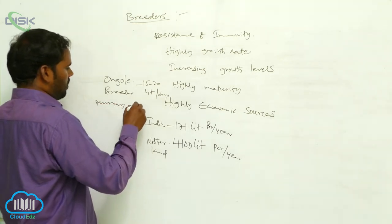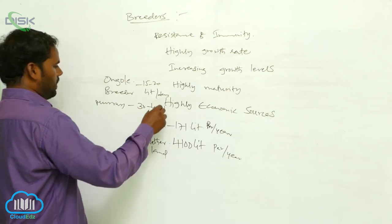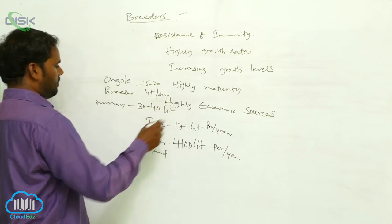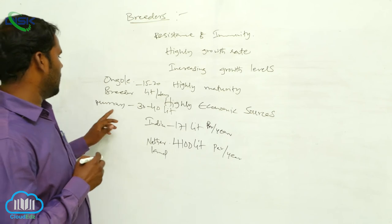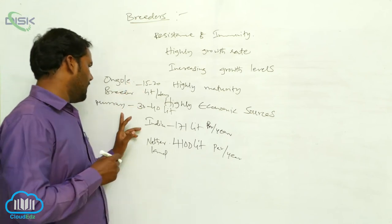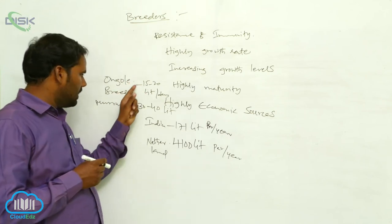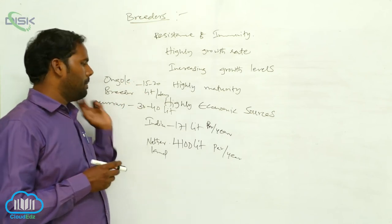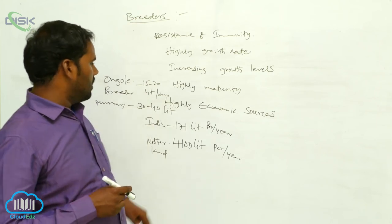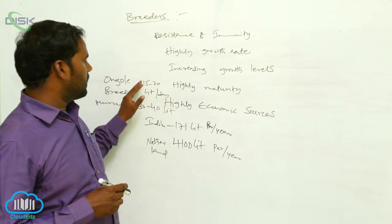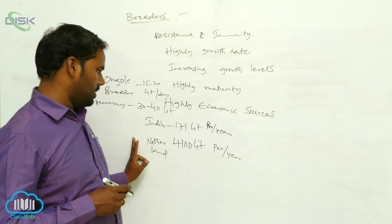Murrah breeders — 30 to 40 liters expected. These are the variations of different nations in breeders. It is completely relevant if we expect it for dairy farm purposes.